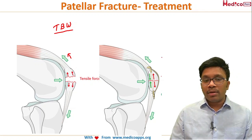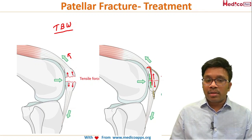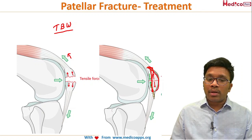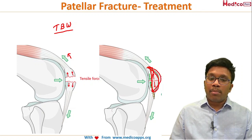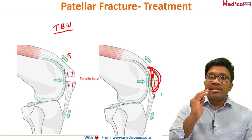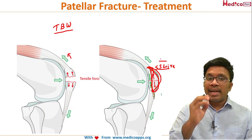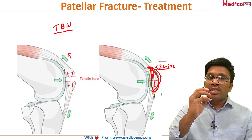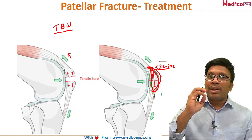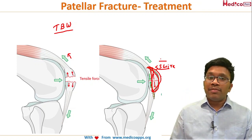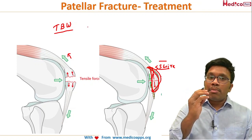To achieve this, two K-wires are passed connecting both fracture fragments, and a loop is made with a stainless steel wire. The specialty of this construct is that the distraction forces from the quadriceps tendon are converted into compression forces. Compression promotes healing — this is the beautiful principle of tension band wiring.